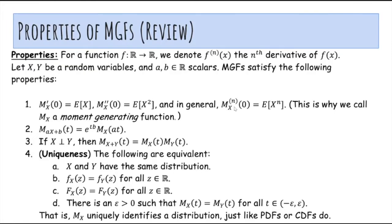The nth derivative of the MGF at 0 is just the expected value of X to the nth power. The second property says that the MGF of aX plus b, where a and b are constants, can be written in terms of the MGF of X.